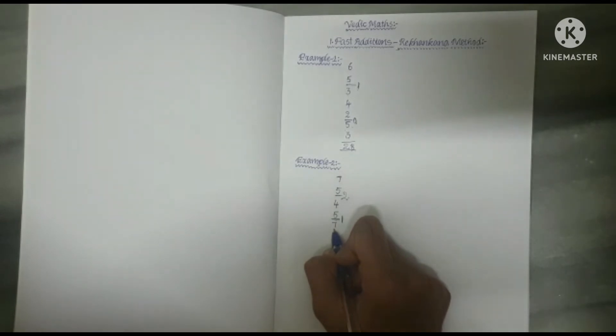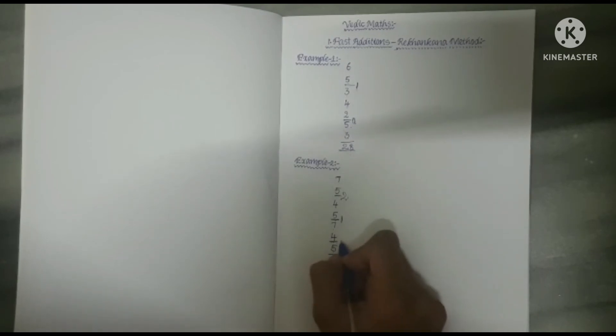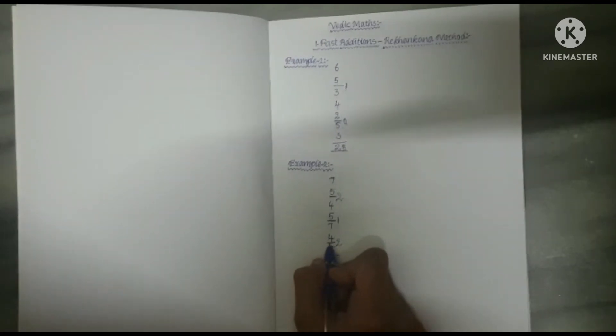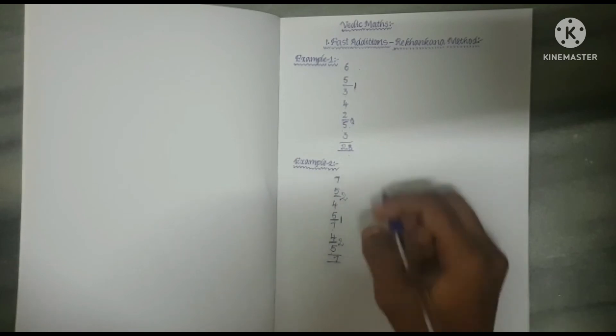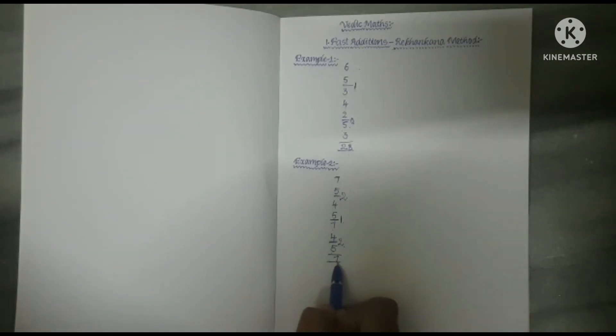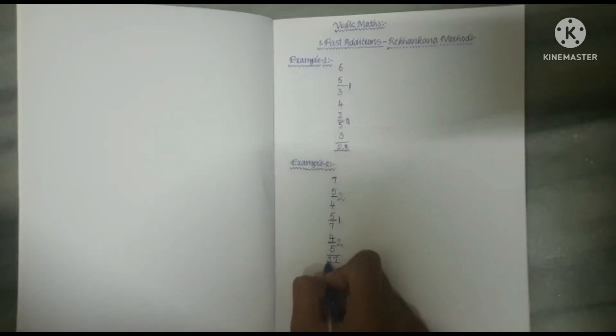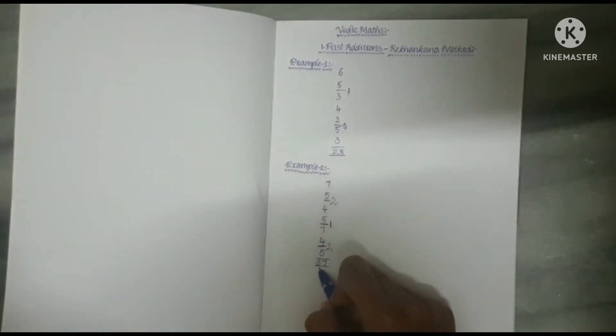1 plus 7 is equal to 8. 8 plus 4 is equal to 12. Here we drop 10 in the form of a line and 2 is carried forward. 5 plus 2 is equal to 7. And in this entire example 3 numbers are carried forward. So we have to write 3 on the left side of 7.